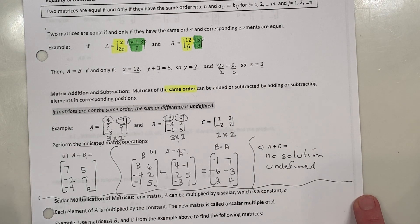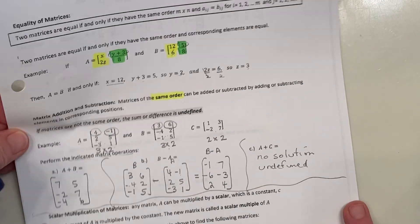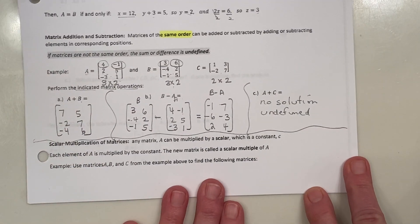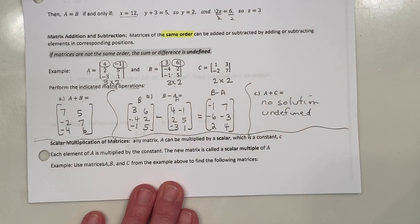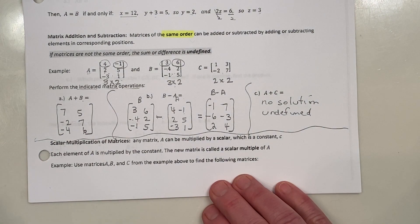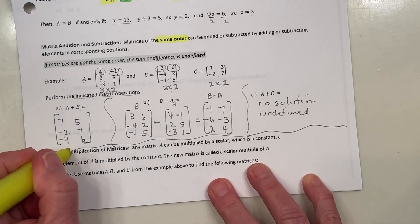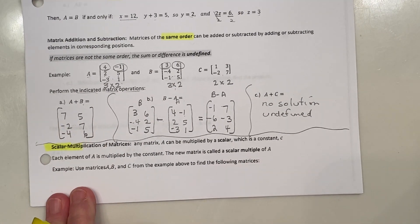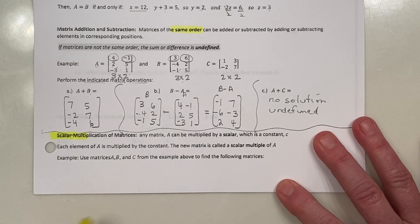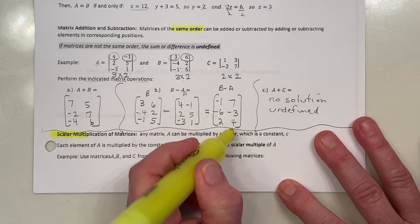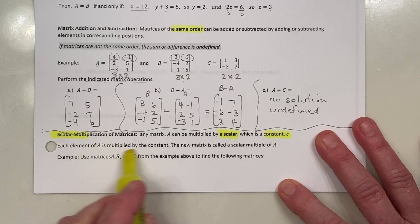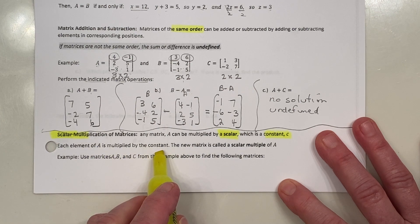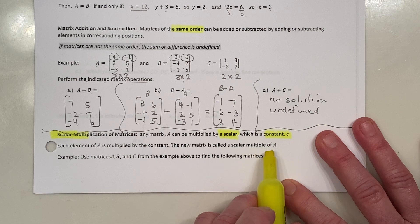Adding and subtracting matrices is pretty straightforward. Let's move on to multiplication. There are two types: the first is called scalar multiplication — a fancy word meaning you multiply a matrix by a single number, a constant. Every element of the matrix is multiplied by that constant, and the result is called a scalar multiple of A.